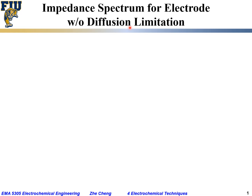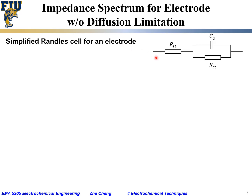We consider an electrode reaction without diffusion limitation, which means mass transfer is relatively fast compared with the electrode reaction. Quite often people use a so-called simplified Randles cell to represent this. It contains three elements, the first of which is an ohmic resistance, R_ohm.